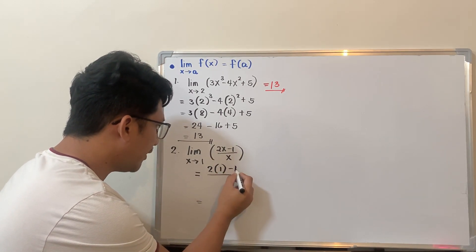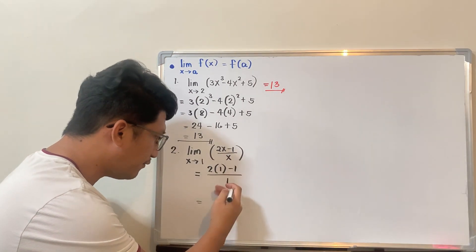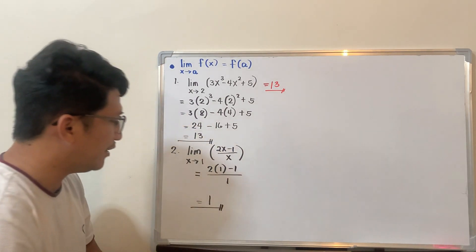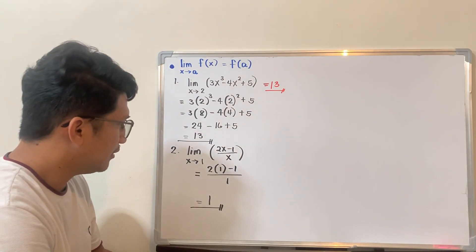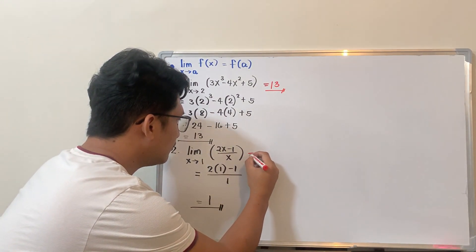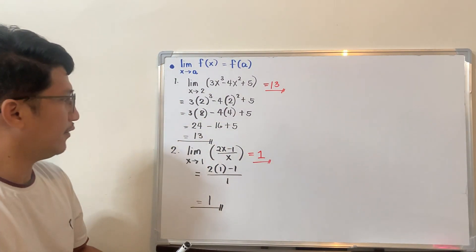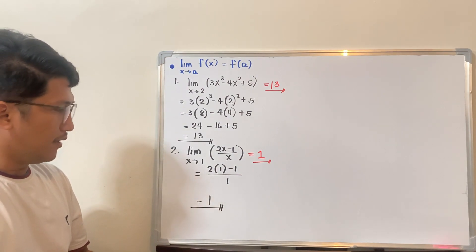So from here, 2 times 1 is 2, minus 1 is just simply 1, all over 1 is, of course, 1. So the limit will be equal to 1. So you will say, this is equal to 1.